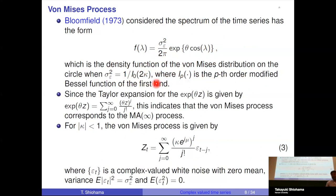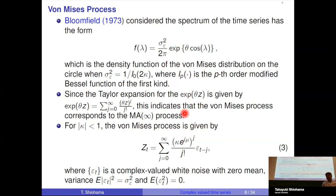Expanding the exponential function, the model can be expressed by a moving average representation. The complex-valued time series z with this expression has a spectral density of von Mises type, where y_t is complex-valued white noise with zero mean and variance σ²_ε, and the complementary variance is zero.